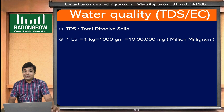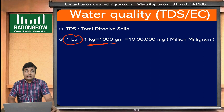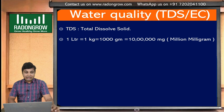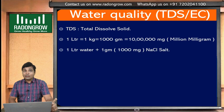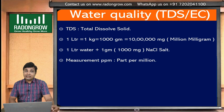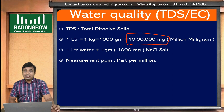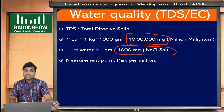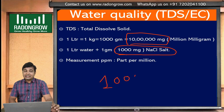If we take 1 liter of pure water and add 1 gram of pure salt, 1 gram equals 1000 milligrams, and 1 liter of water means 1 kg. So this 10 lakh milligram water contains 1000 milligram of salt — sodium chloride. That means the solution PPM is 1000 PPM, meaning TDS is 1000 PPM. That is the simple calculation.